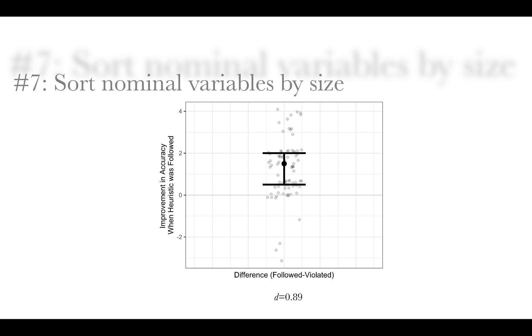And the actual answer ends up being five times. And what we found is that when the categories were sorted, positive scores here means that they did better with the heuristic followed. But when the categories were sorted, people were a lot more accurate than they were when they weren't sorted. And that Cohen's d there is 0.89.